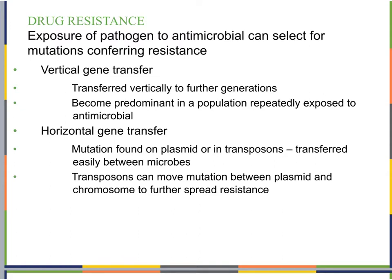Those that are susceptible will die away. Those that are resistant can hang out longer, less affected by the antimicrobial, and they can continue through binary fission and pass on that genetic information. This is called vertical gene transfer — transferred vertically to further generations, making copies with the genetic makeup to be resistant to that particular antimicrobial. It then becomes predominant in a population given repeated exposure.